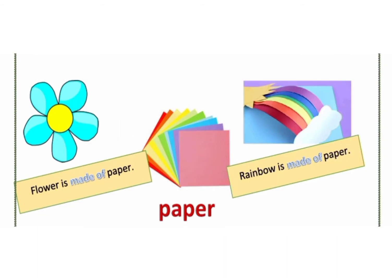And now paper. Flower is made of paper. Rainbow is made of paper.